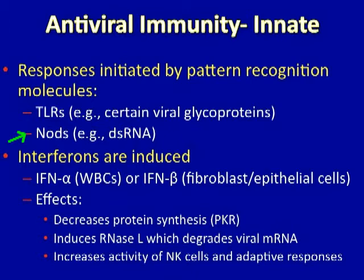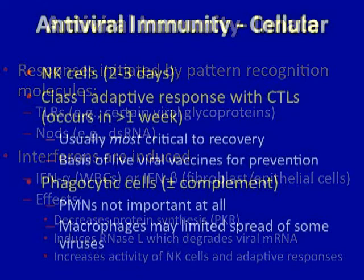Therefore, the presence of double-stranded RNA in the cytoplasm of the cell is an indicator of viral infection. Interferons can be induced nonspecifically by viral infections. Alpha-interferon comes from white blood cells, or beta-interferon from fibroblasts or epithelial cells. These molecules have various effects that influence the course of viral infection — either by decreasing protein synthesis in the cell, inducing RNase L which degrades viral mRNAs, or increasing the activity of NK cells and the adaptive immune responses.